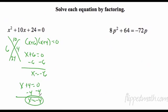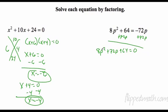Over here I have to add my 72p, get it all on the same side. It has to equal 0 first. So I have 8p² plus 72p plus 64 equals 0.